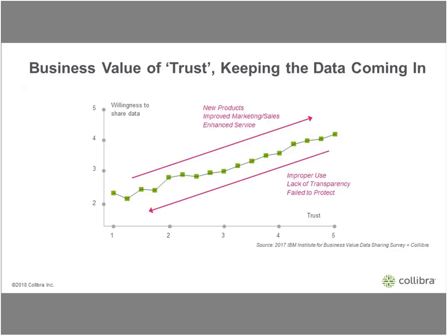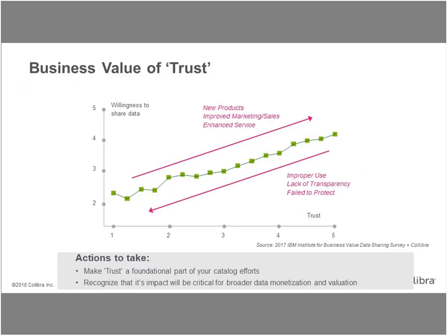If I have more data, I can create new products and services, improve marketing and sales, and introduce new services. But if I don't do a good job with it, it goes the other direction. Trust is bi-directional: if I lose it, I can go from right to left — whether it be improper usage, lack of transparency, or failure to protect it. So trust, as you're thinking about it in the context of catalogs, is very important.